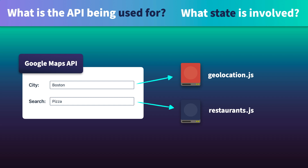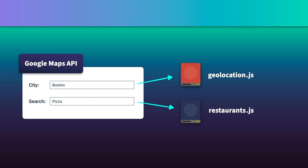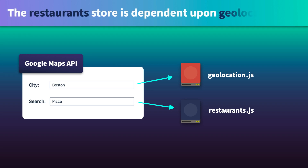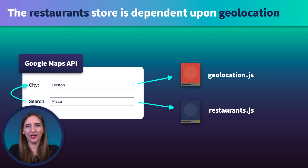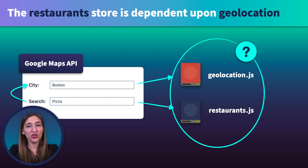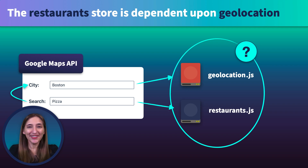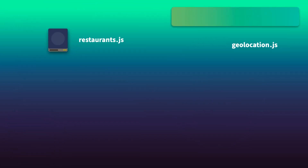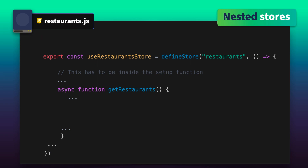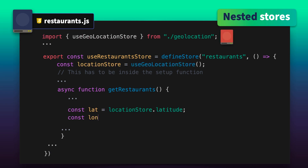But wait a minute. In the restaurant store, when we request that list of relevant restaurants, it requires the use of geolocation data. This means we need to use data from the geolocation store in the restaurant store. You might be wondering if this ruins our approach to creating those separate stores. But no, it doesn't have to. This is what we call nested stores, where we can simply import the geolocation store into our restaurant store to access the bits of it that we need.